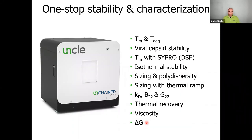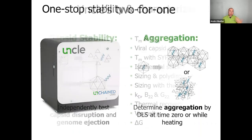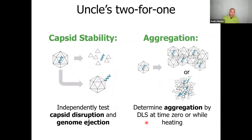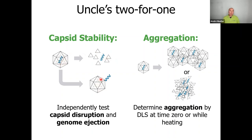When looking at viral vectors, there are two phenomena we can characterize in UNCLE: capsid stability and aggregation. A viral vector capsid can aggregate or fall apart and then aggregate — both types are monitorable with static or dynamic light scattering. For capsid stability, the capsid proteins will melt and lose their native fold, causing the capsid to fall apart. What makes AAV different is that it carries a transgene it can eject, so there is a second pathway — genome ejection — that also needs to be characterized.